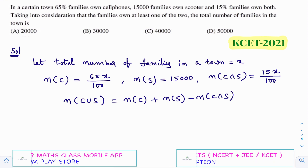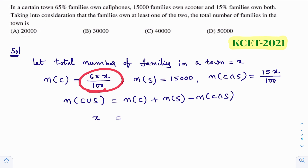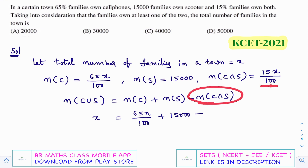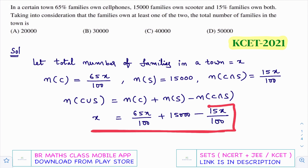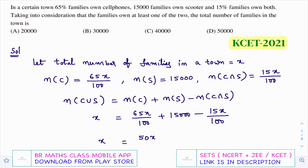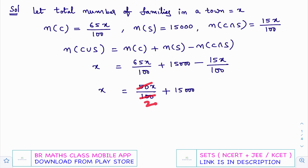So x = 65x/100 + 15,000 − 15x/100. Simplifying the two fractional terms: since both have denominator 100, in the numerator 65x − 15x = 50x, giving 50x/100. So x = 50x/100 + 15,000. Since 50/100 = 1/2, this becomes x = x/2 + 15,000.